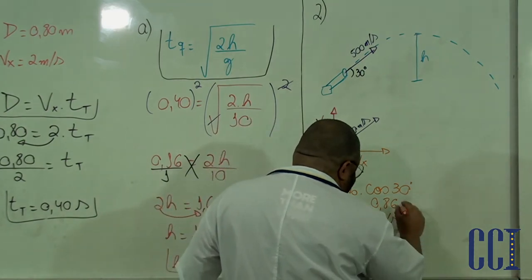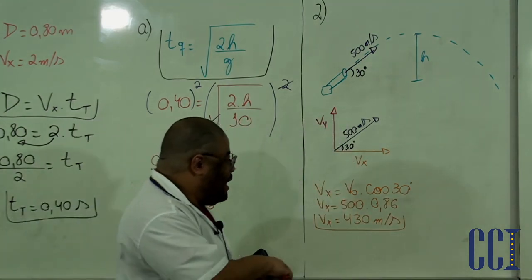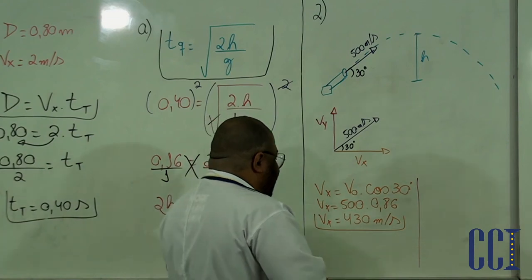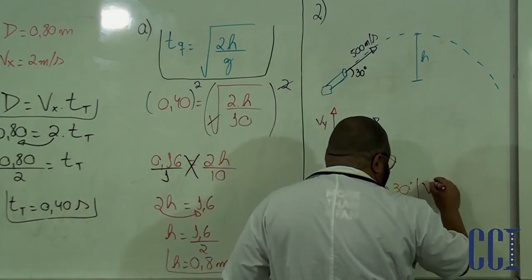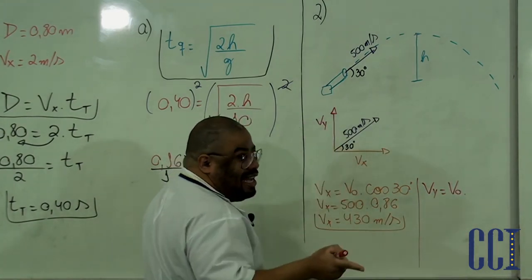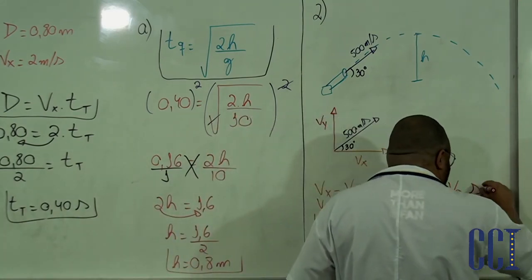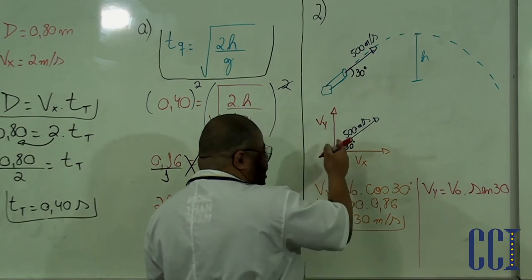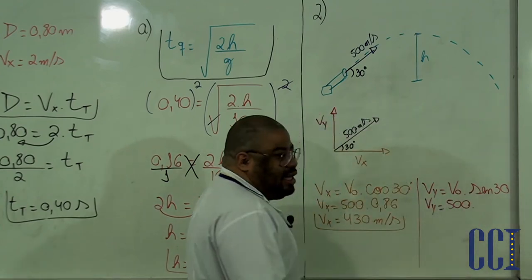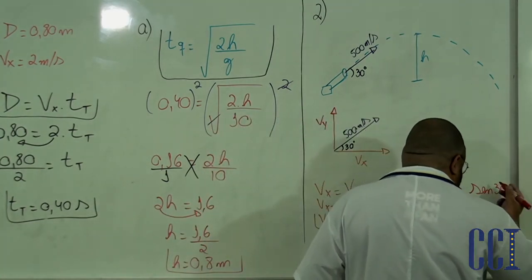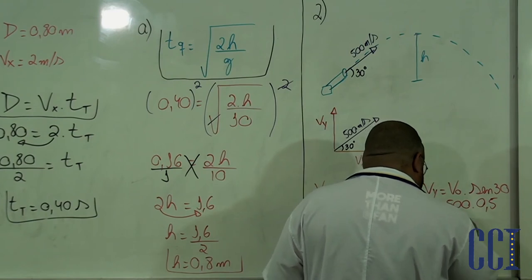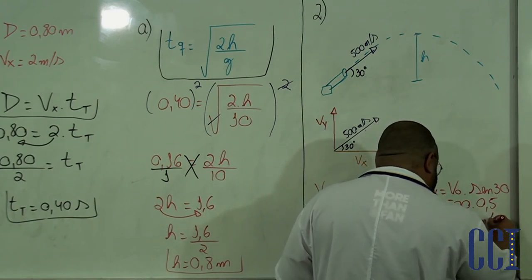Vx já foi calculado: 430 m/s. Agora vou calcular o Vy. Vy = V0 × sen(ângulo), porque está sem ângulo aqui. Então: Vy = 500 × sen(30°). Olhando a tabelinha, sen(30°) = 1/2 = 0,5. Então: 500 × 0,5 = 250 metros por segundo.